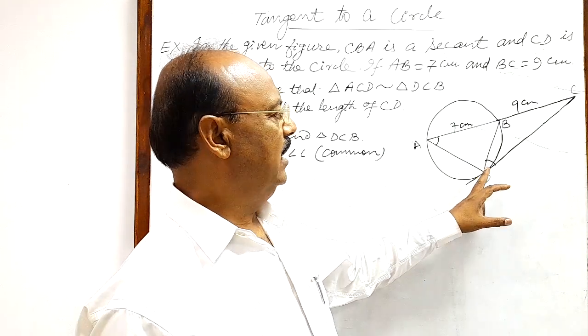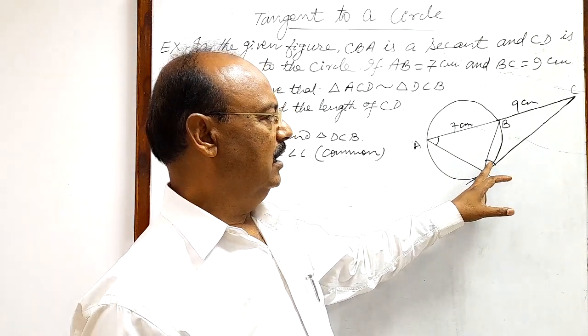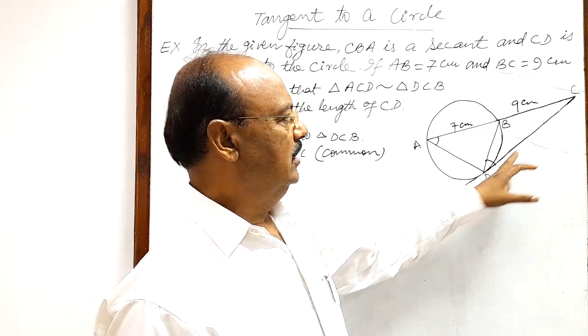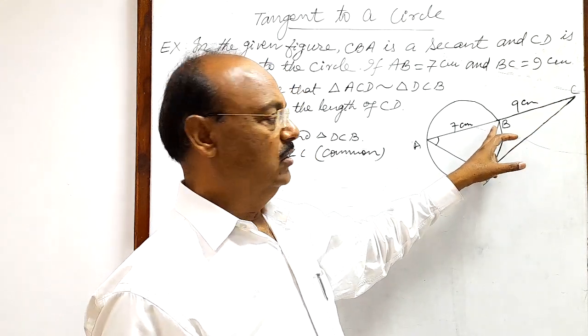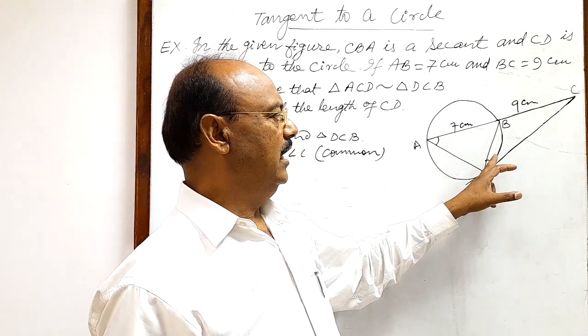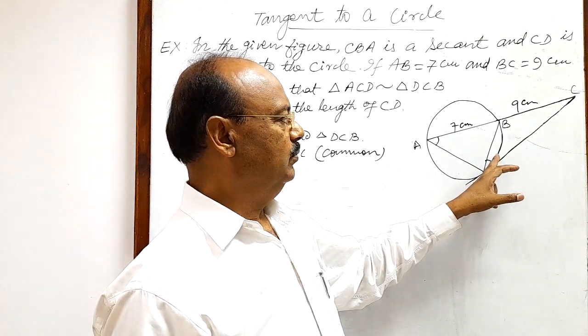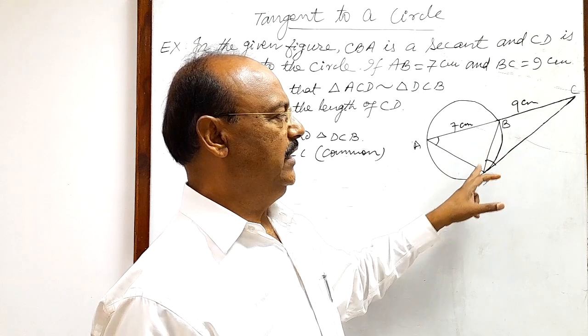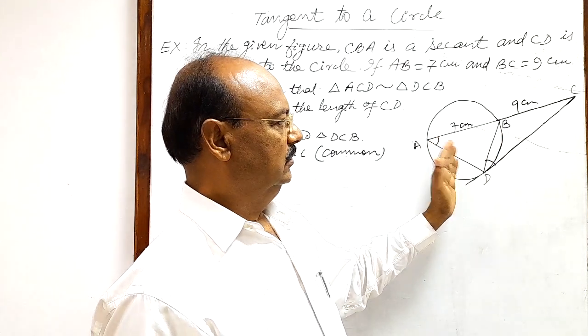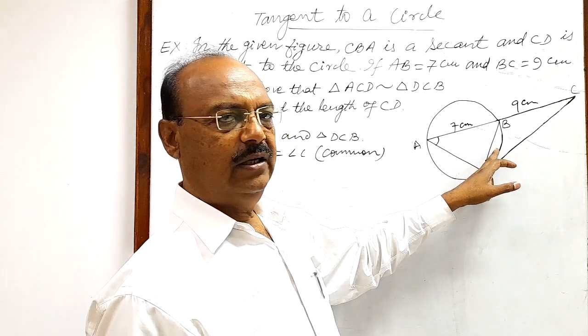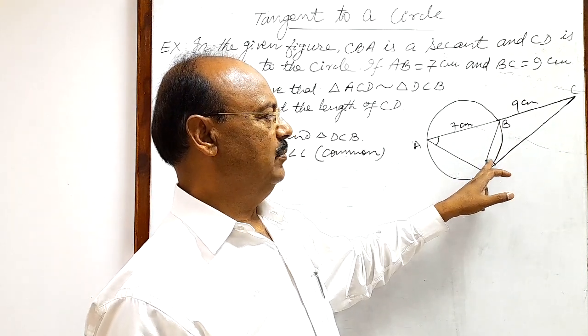Because this angle D is an angle between this tangent DC and chord DB. So we know that this angle will be equal to angle formed by the same chord BD in alternate segment. So this angle is subtended in the minor segment.